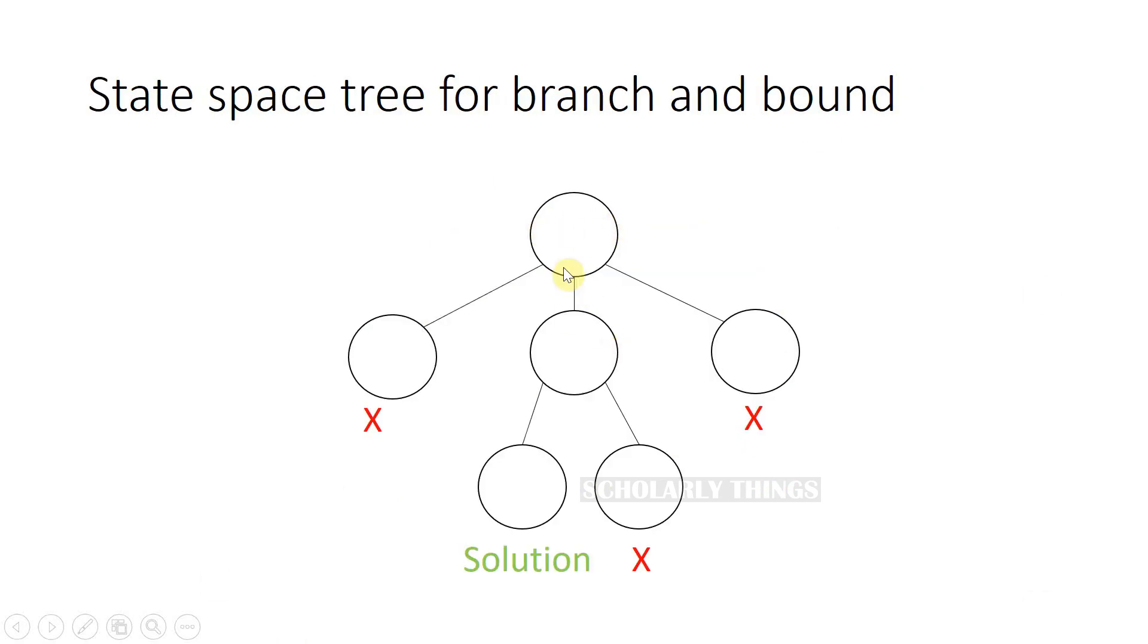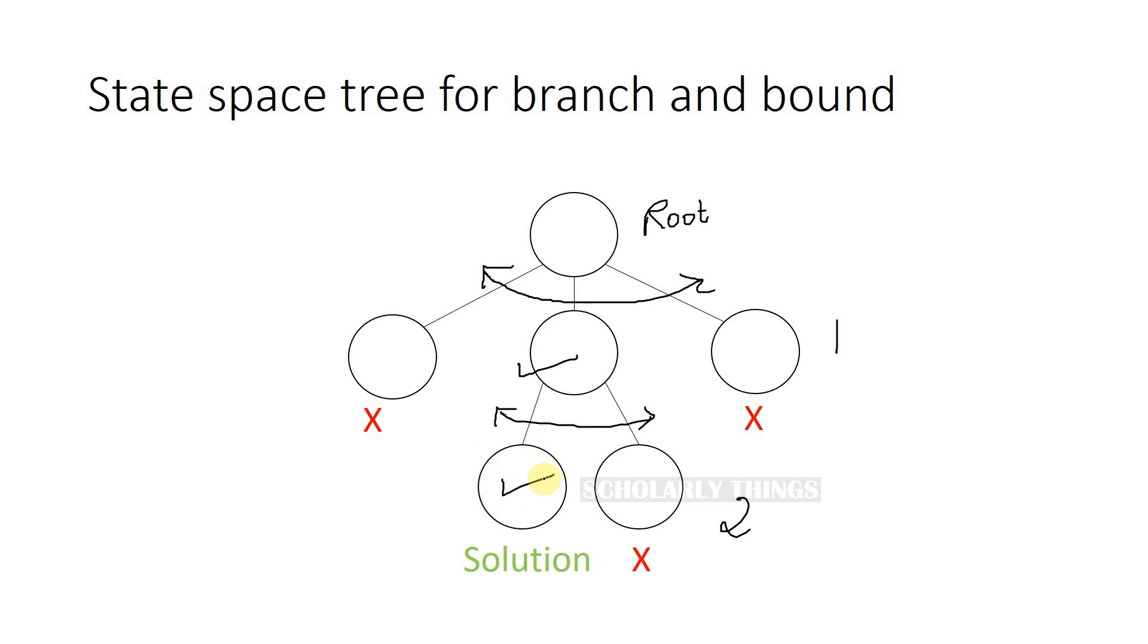This is an example state space tree. This is root. This is level 1. This is level 2. From root you will explore breadth-first. You will explore all the possible selections that you can make for level 1. You will then calculate the lower bound or the upper bound depending on the type of problem. Then you will choose an optimal value among those. From that point you will again branch out and see all the possible branches. Eventually, you will end up finding an optimal solution.